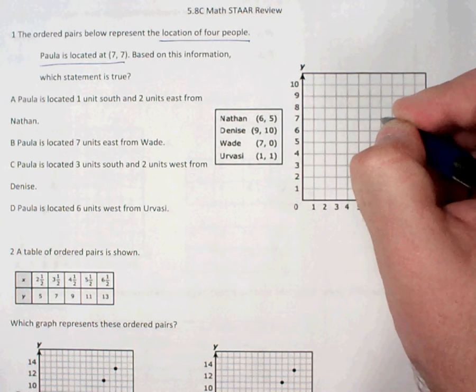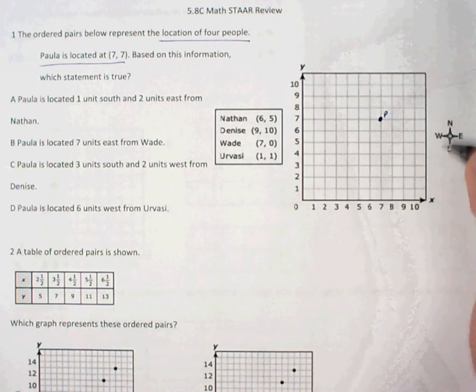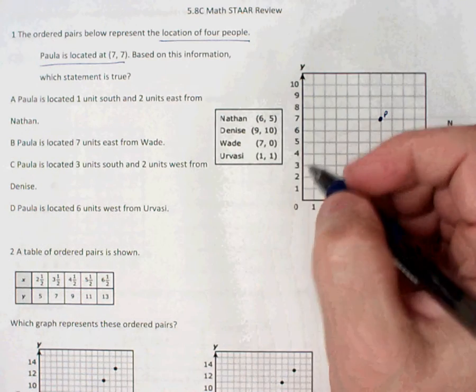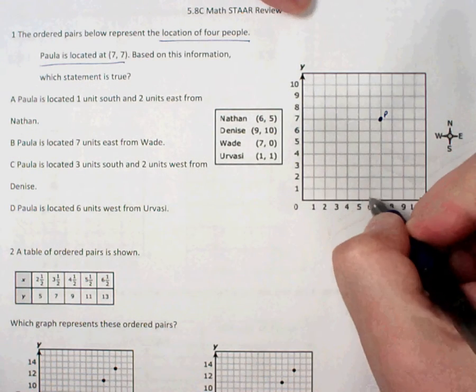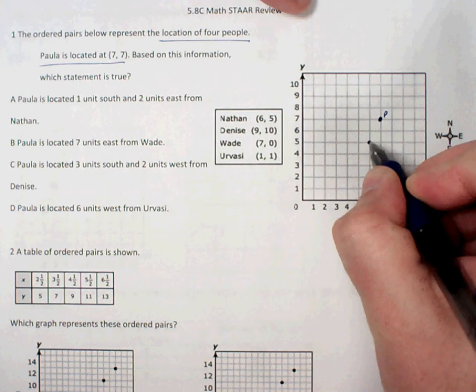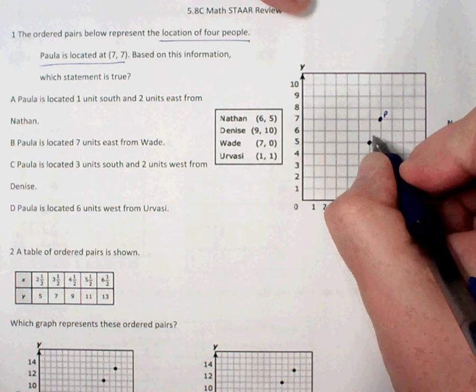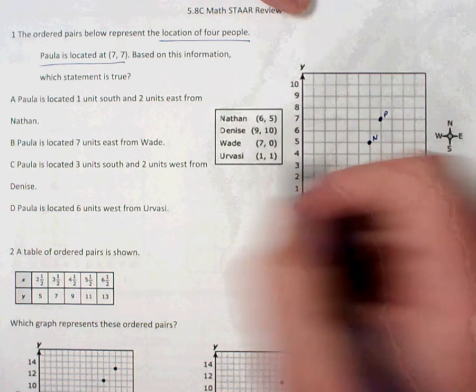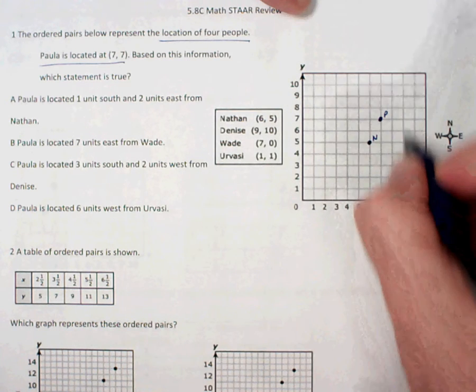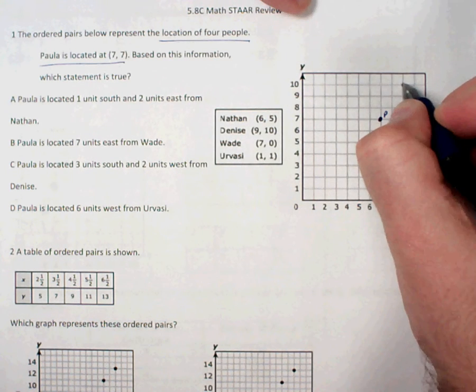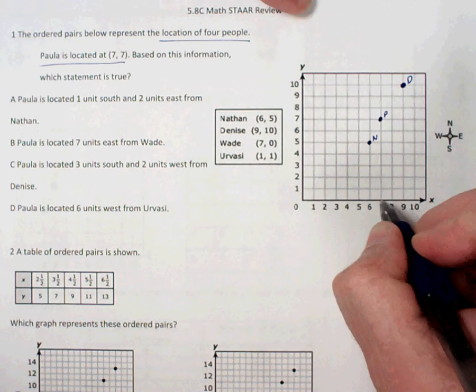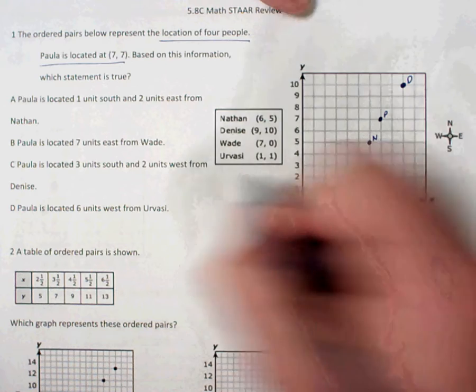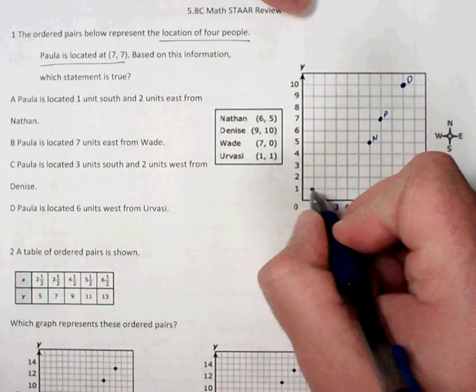So Paula is here at (7,7) and I'm going to label that with a P just so I can kind of remind myself who is who. Nathan is at (6,5). So again, I'm just plotting the points based on the information I'm giving. Denise is at (9,10). Wade is at (7,0). And Urvasi is at (1,1).